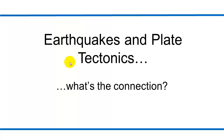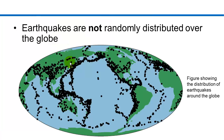So, earthquakes and plate tectonics — what's the connection there? Well, as you can see in this diagram, earthquakes are not randomly distributed around the globe either. The black dots on this map of the world show where earthquake activity is occurring. And just as with the volcanoes, earthquakes are happening along the boundaries of our plates. Here's South America again. Here's North America. Lots of earthquake activity on the west coast.